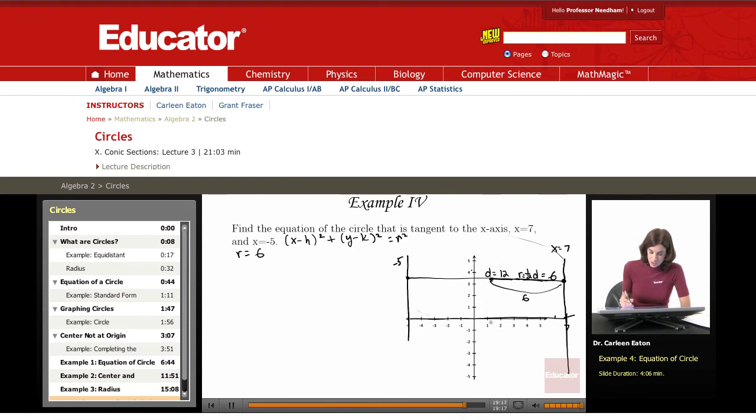Therefore, the x value of the center is going to be 1. Now, what is the y value? The other thing I know is that this circle is tangent to the x-axis. So it's going to have an endpoint on the x-axis. And then if it's going to extend from here to here, it's going to have to go up to 6.